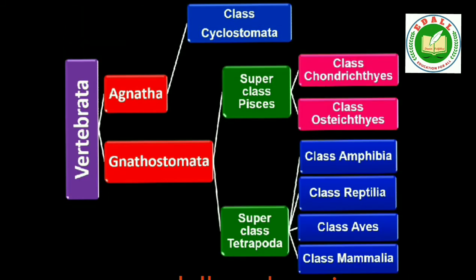The subphylum Vertebrata is further divided into Agnatha (these lack jaw) and Gnathostomata (these bear jaw). Agnatha is further divided into Class Cyclostomata. Gnathostomata is divided into Superclass Pisces (they have fins) and Tetrapoda (they have limbs). Pisces is divided into Class Chondrichthyes and Osteichthyes. Tetrapoda is divided into Class Amphibia, Reptilia, Aves and Mammalia.